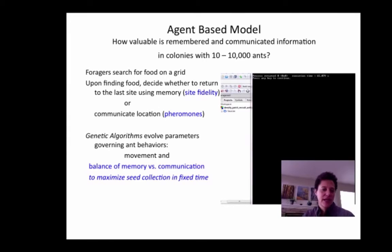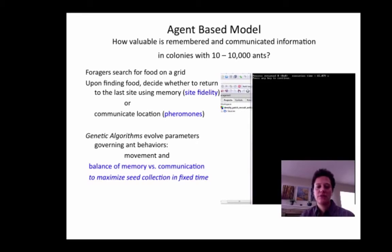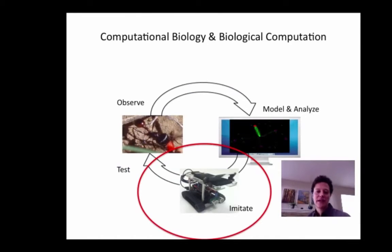We use a technique called genetic algorithms to evolve the parameters of the model. In other words, there are many different ways that the ants could behave, many different ways they could move, many different ways they could balance memory and communication. Our goal was to find the way that maximized the rate that seeds were collected in a fixed period of time. We learned a great deal about what we think the ants in the field are doing and what good strategies for foraging collectively are, and we then wanted to take those strategies and do something with them.